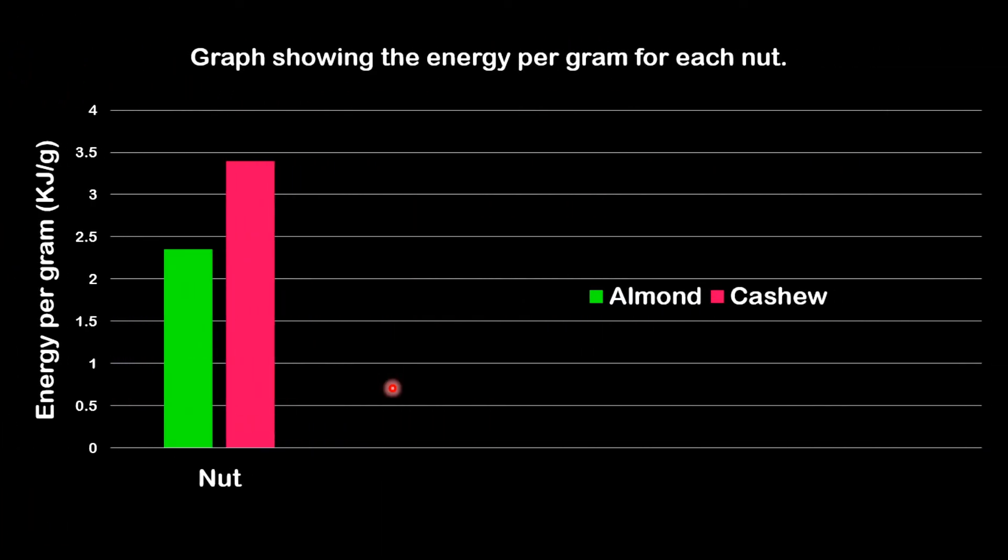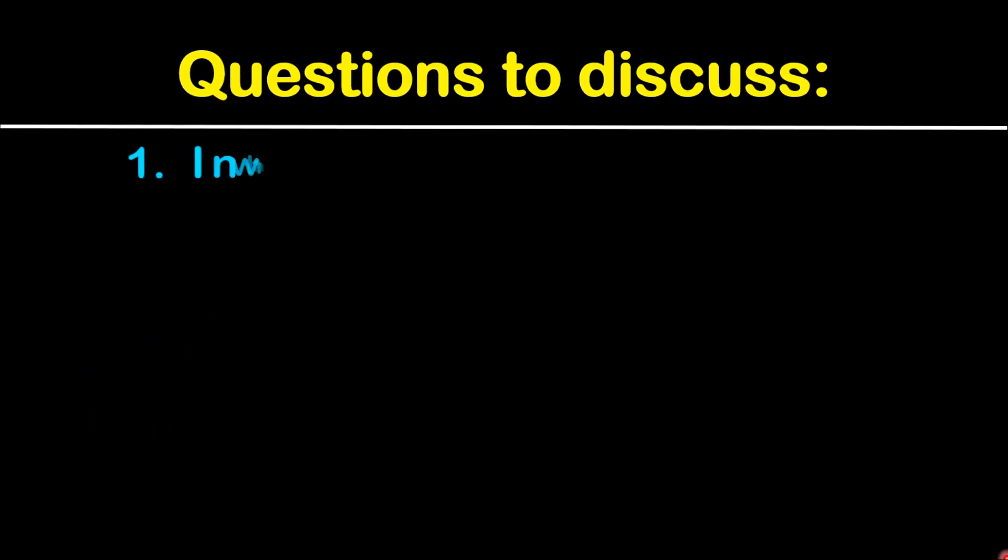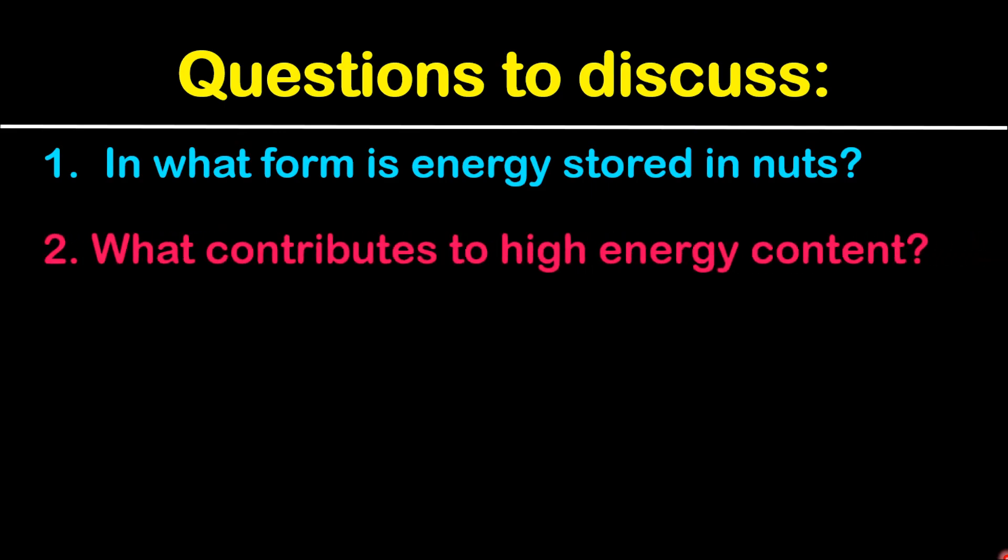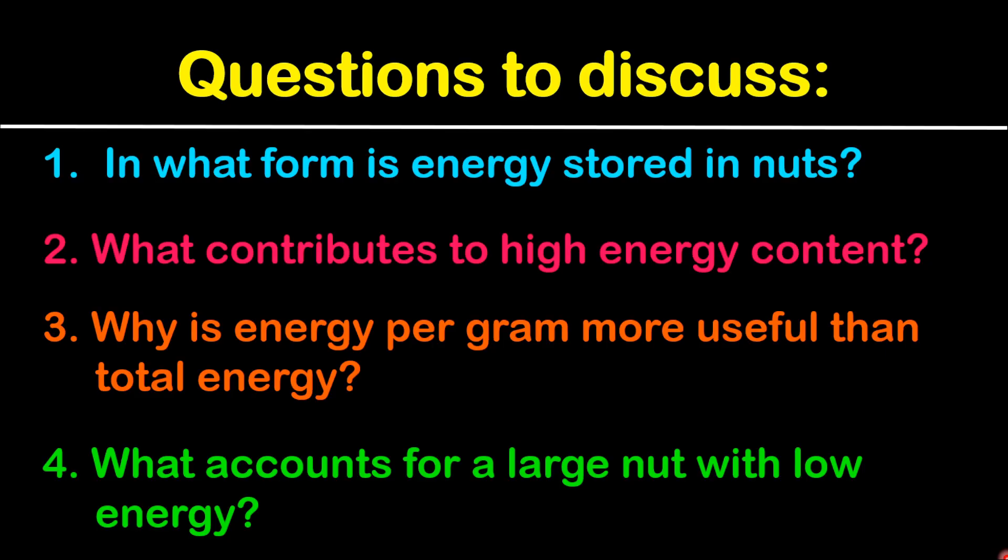Now you can plot your graph showing the results. Here we are looking at the energy per gram for each nut, and we will see which of the nut will contain the most energy. Now some questions for discussion: In what form is energy stored in nuts? What contributes to high energy content? Why is energy per gram more useful than total energy? What accounts for a large nut with low energy?